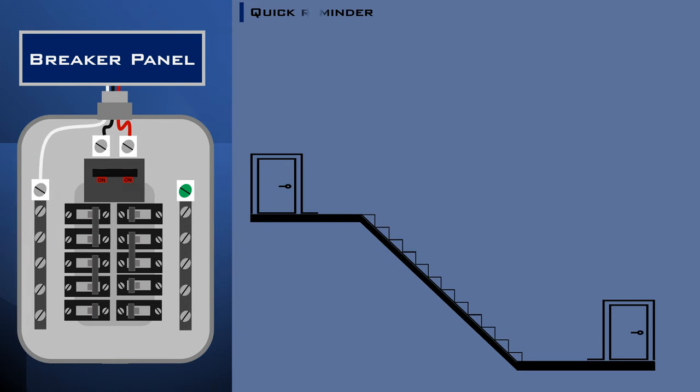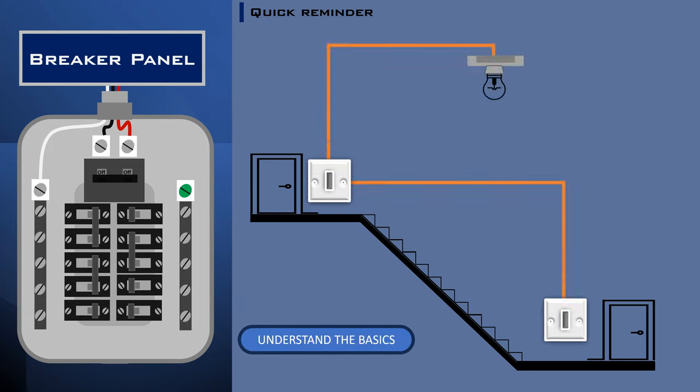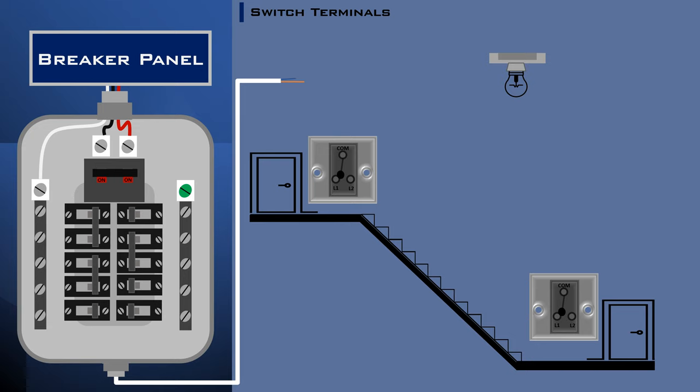A quick reminder on this topic. Always turn off the power at the circuit breaker before working on electrical wiring. In a two-way lighting circuit, you have two switches in different locations controlling a single light or set of lights. This setup allows you to turn on or off the light from either switch. Familiarize yourself with the terminals. The live wire connects to the common terminal. L1 and L2 are the traveler terminals connecting to the second switch.